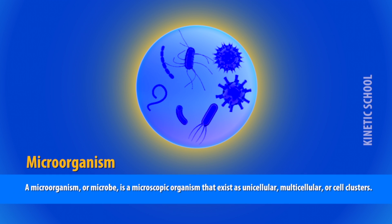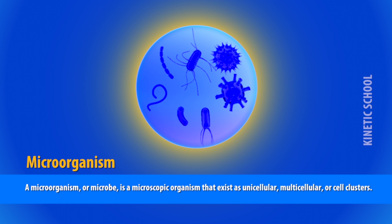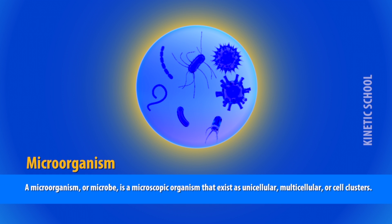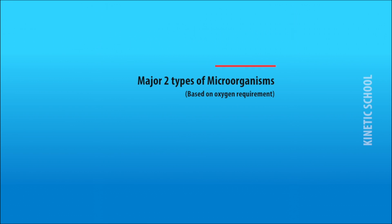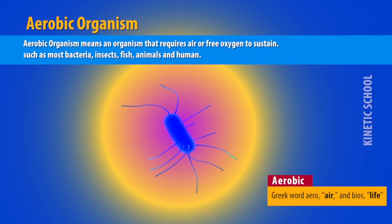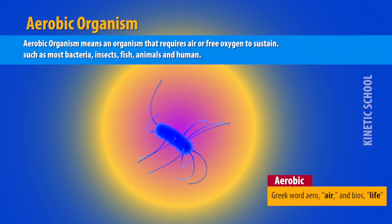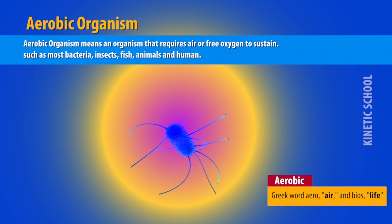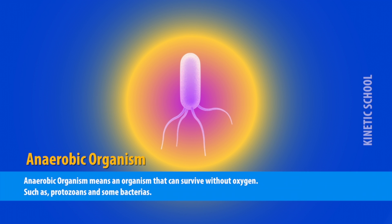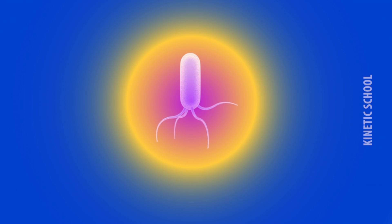A microorganism or microbe is a microscopic organism that exists as unicellular, multicellular, or cell clusters. There are two major types based on oxygen requirement: aerobic organisms, which require air or free oxygen to sustain — such as most bacteria, insects, fish, animals, and humans — and anaerobic organisms, which can survive without oxygen, such as protozoans and some bacteria.